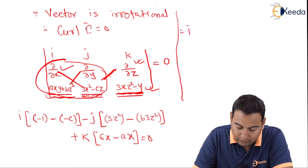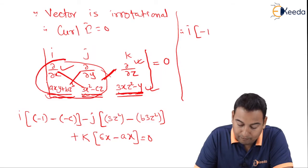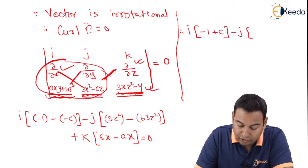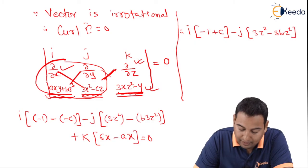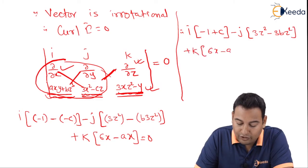Therefore, with i we are left with minus 1 plus c, minus j, 3z squared minus 3bz squared, and with k we are left with 6x minus ax, which is equal to 0.